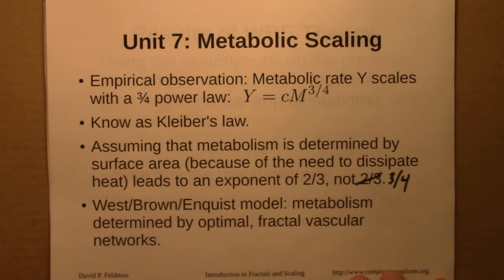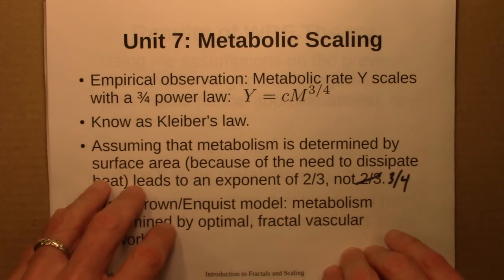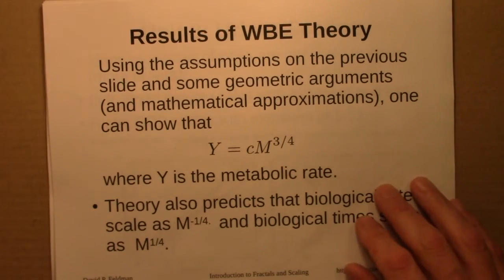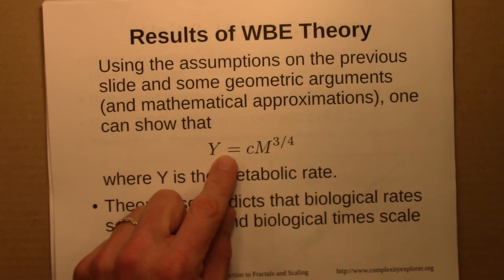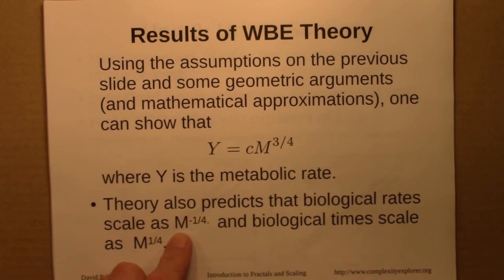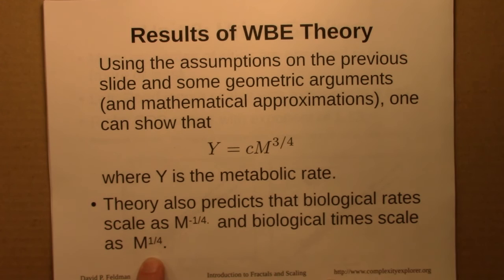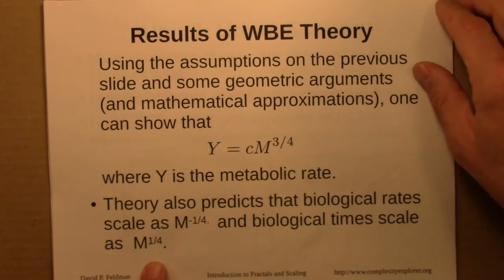The main crux of their argument is that metabolism is determined by optimal fractal — i.e., self-similar — vascular networks. Their theory leads to a prediction that is very well borne out experimentally. Interestingly, they also predict that biological rates like heart rate and respiration rate scale as m^(−1/4), and biological times like lifetimes scale as m^(+1/4). These are also pretty well borne out experimentally.